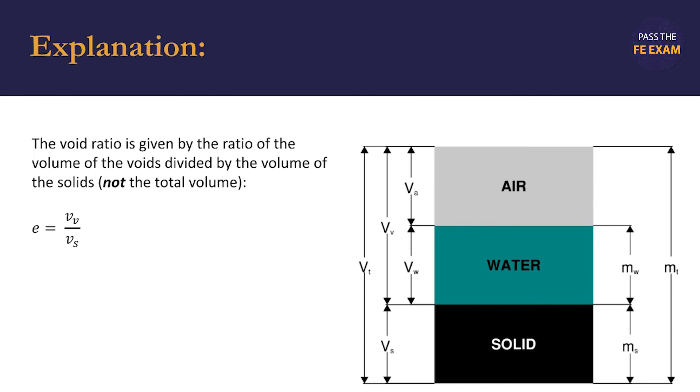So again, the void ratio is the volume of the voids divided by the volume of the solids, not divided by the total volume of the soil sample. So be very careful here because chances are one of the potential answers that is offered to you will result from incorrectly modeling the equation and dividing the volume of the voids by the total volume instead of the volume of the solids.